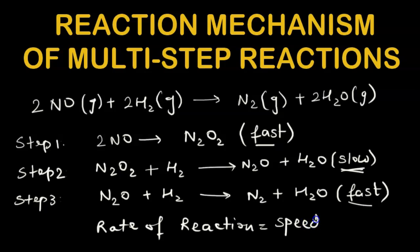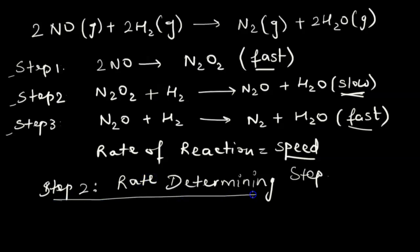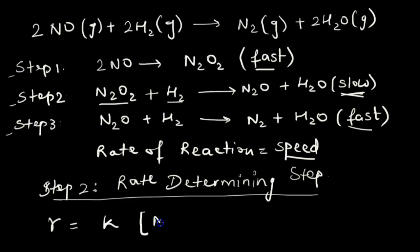When a reaction is given in multiple steps, the rate law is always determined using the slowest step. Since step 2 is the slowest, it is called the rate determining step. The rate law is written as: rate = k[N₂O₂]¹[H₂]¹, where each reactant's concentration is raised to the power of its stoichiometric coefficient in the slow step.